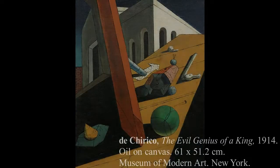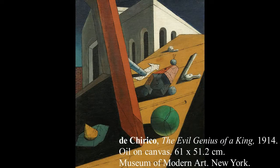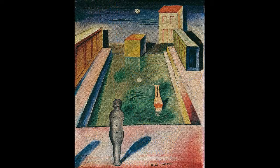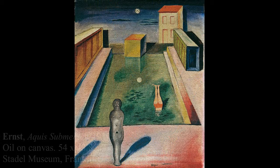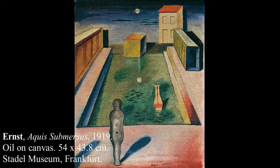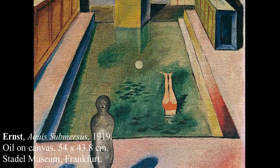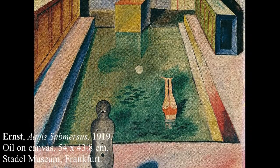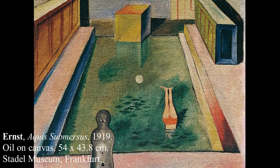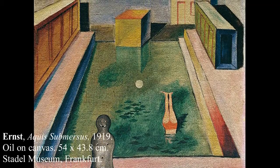A few of Ernst's early paintings are similar to the metaphysical style of De Chirico. One of these paintings was Aquis Submerses, which was one of Ernst's first known ones, where he experimented with a seemingly random array of figures placed in unconventional areas. Aquis Submerses was an early example of what was to come from Ernst.